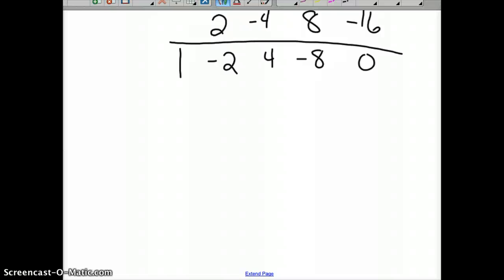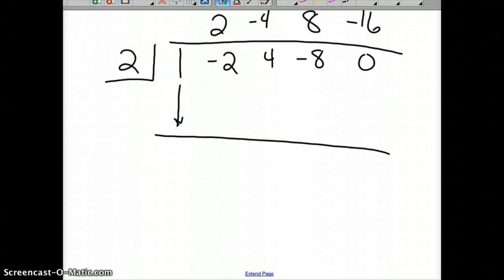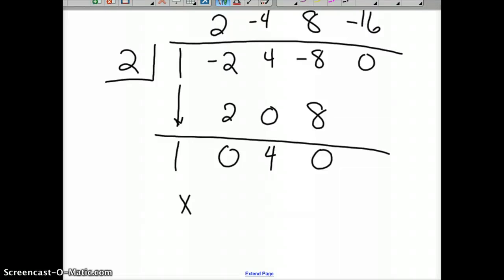Then I would do that again by 2. You bring down your first term, 1. Multiply by 2 to get 2, add to negative 2 to get 0. 0 times 2 is 0, add to 4 to get 4. 4 times 2 is 8, 8 is 0. We're done. Since I've divided by x minus 2 twice, I'm now left with x squared plus 0x plus 4 equals 0.